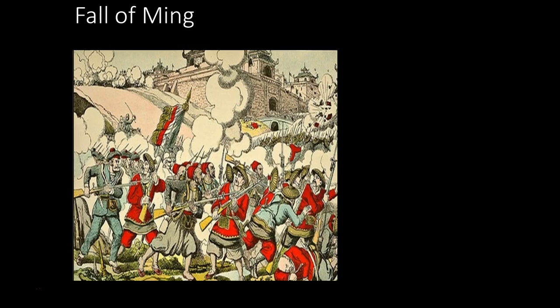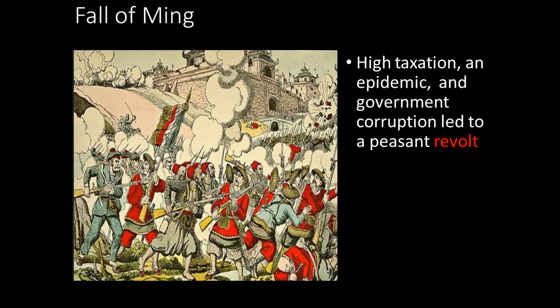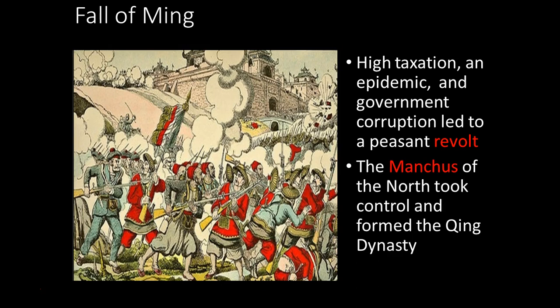Eventually the Ming fall much like other dynasties — taxes get higher, government becomes corrupt, disease spreads, and a peasant revolt destroys the dynasty. In its wake is a new group from the north called the Manchus, reminiscent of the Mongols — very warlike, skilled with horses — and they take over, forming the Qing Dynasty.